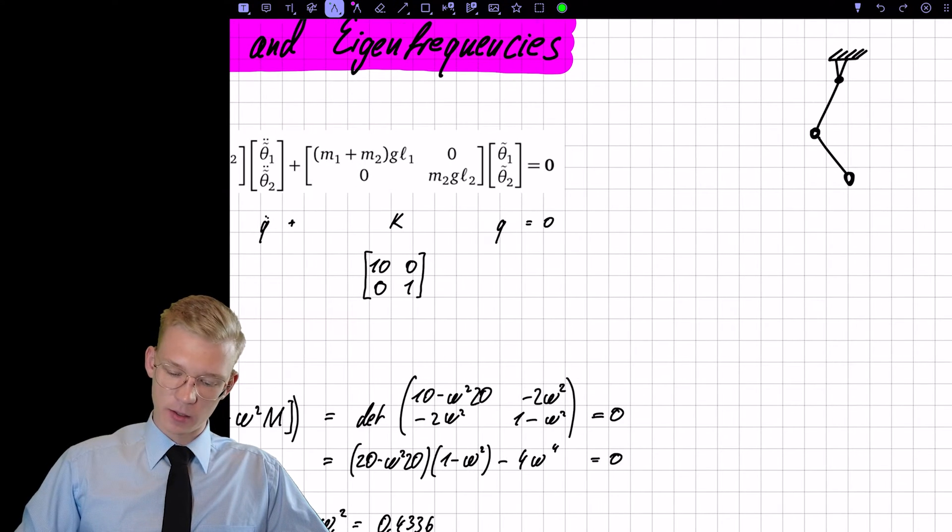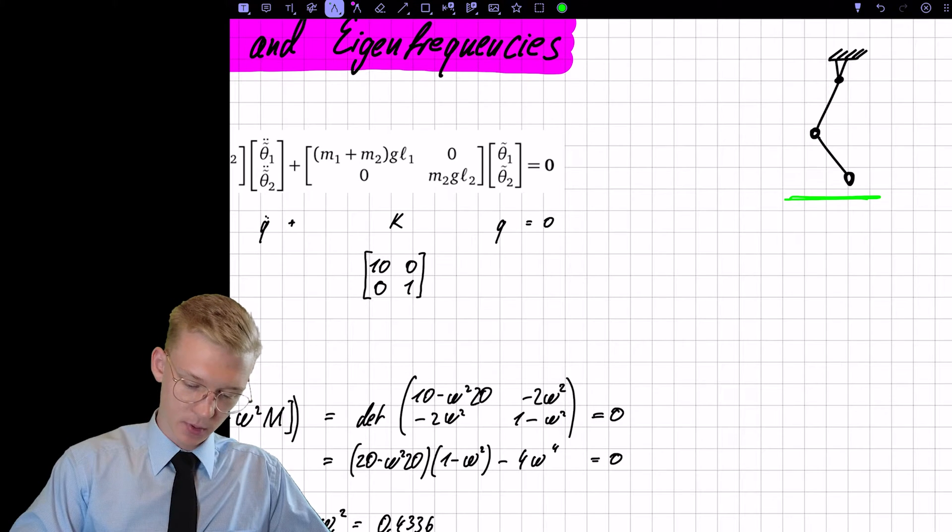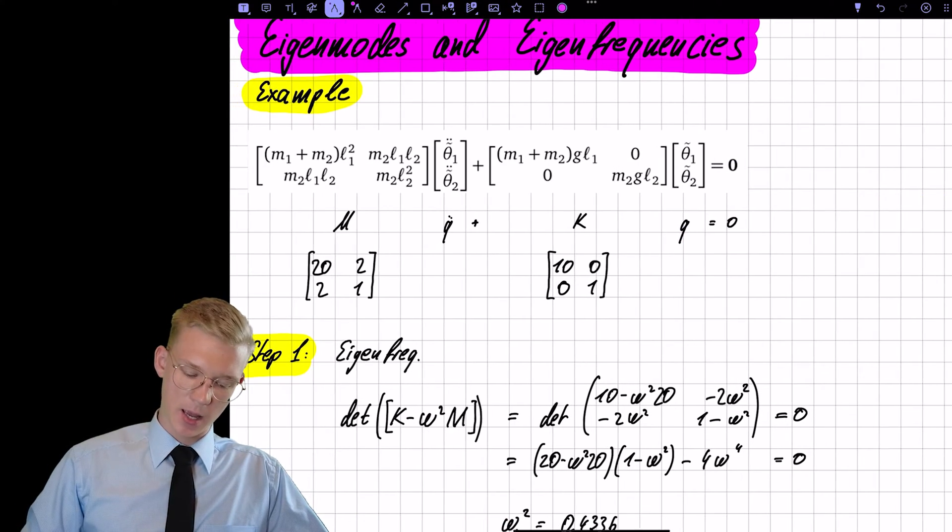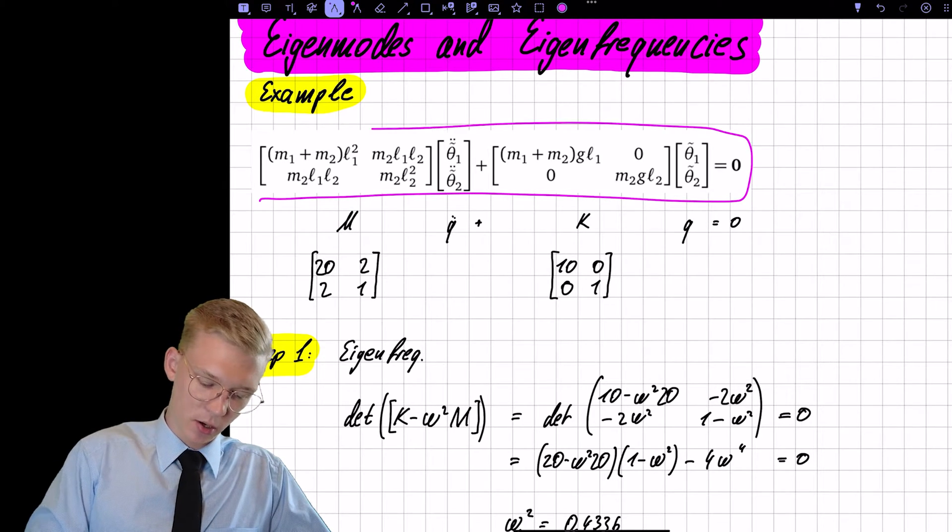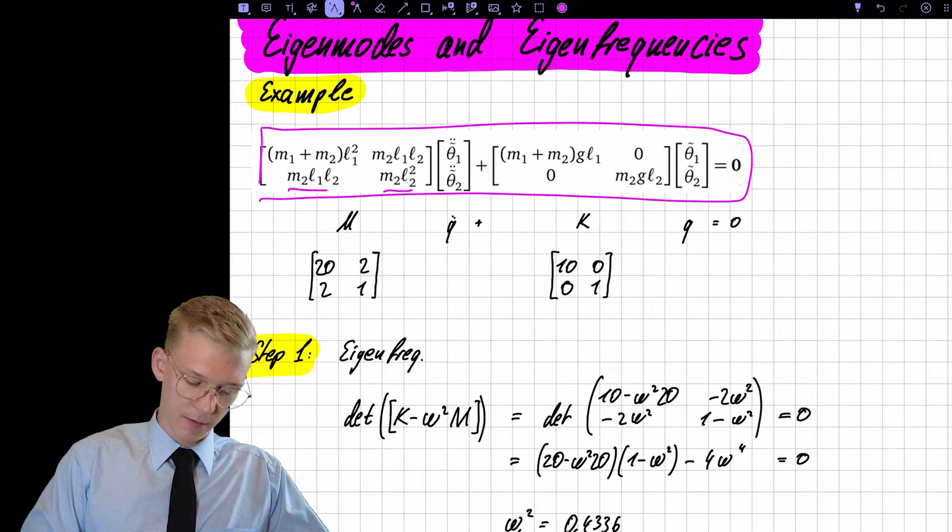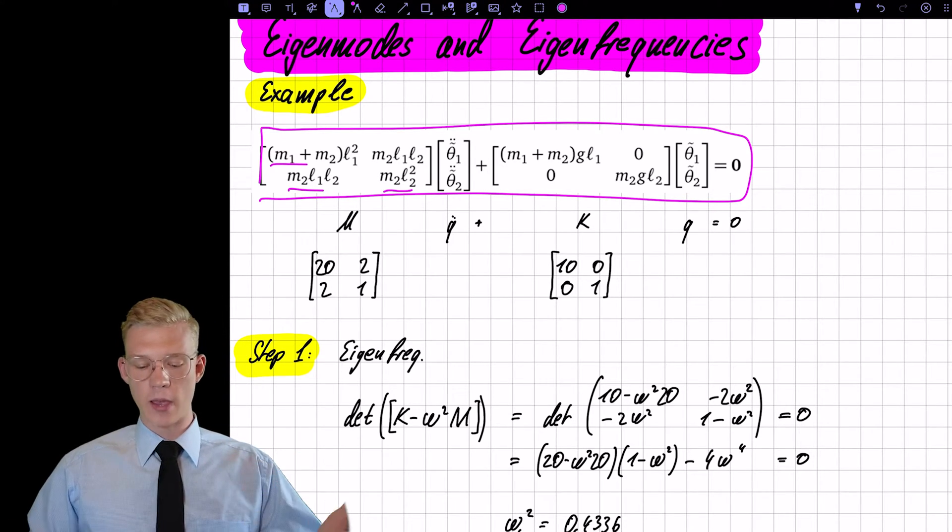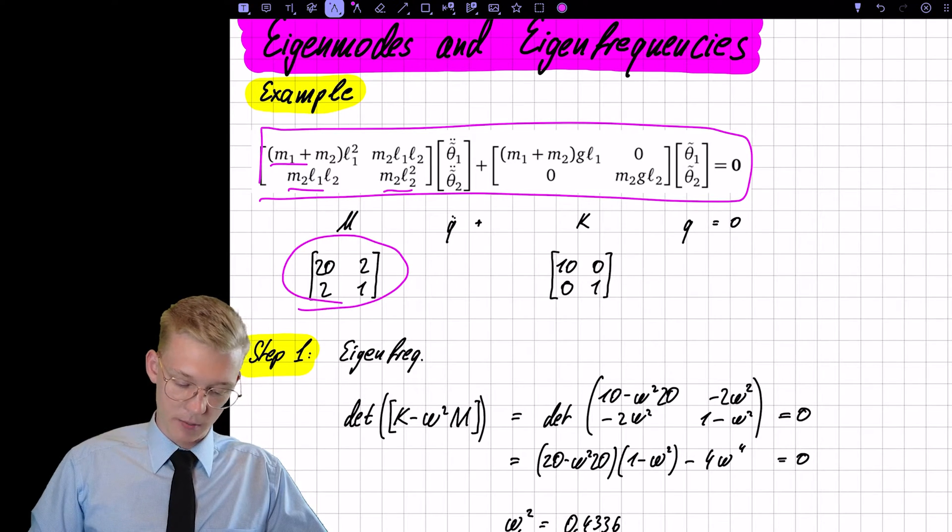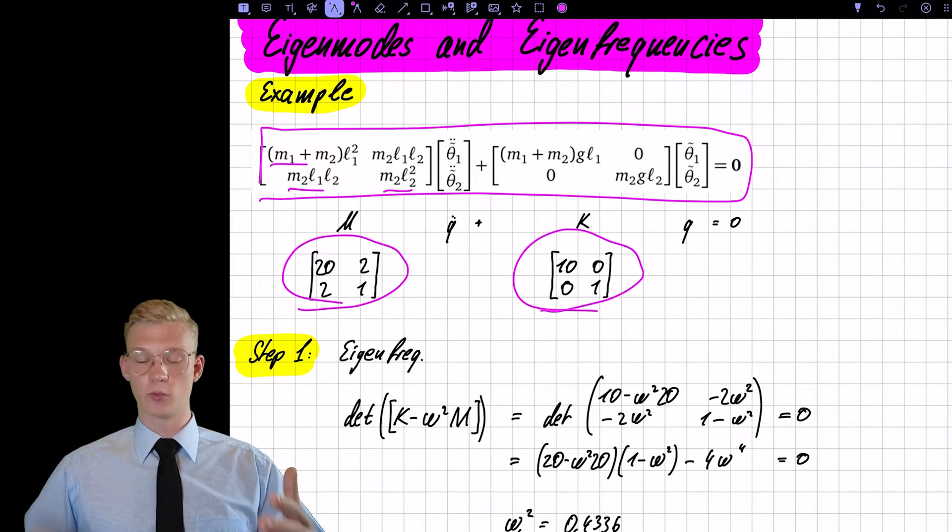We have a double pendulum right there. Let me switch colors. So we have a double pendulum and these are the linearized equations of motion. Now we still have those variables and so we add some numbers to them. So we have now the mass matrix and the stiffness matrix with some numbers so we can work with that.